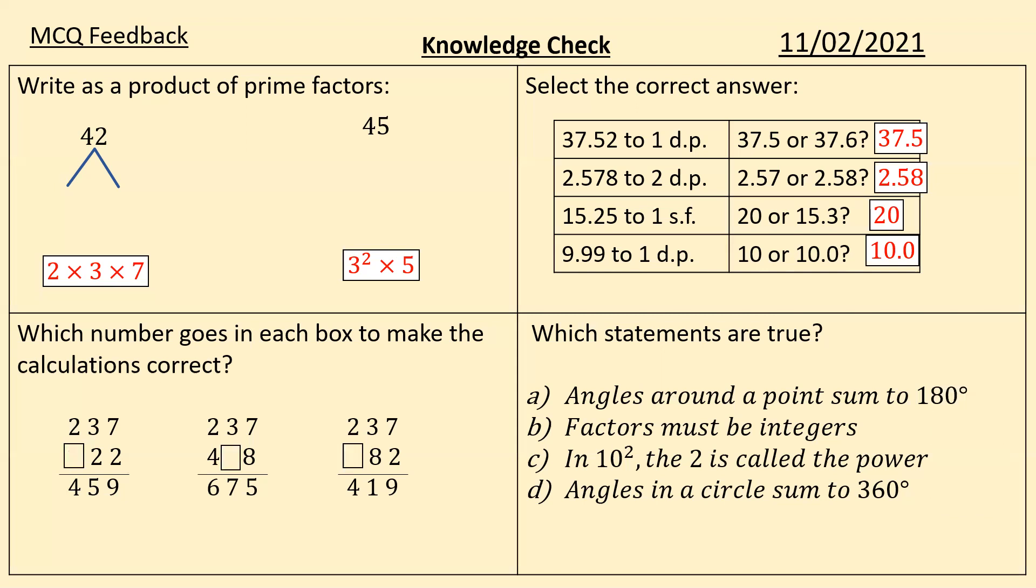Very similar with the last one. Three and eight, we can see in the tens column, which means 10 of those tens would have become 100. So we actually already have three hundreds. We only need to add the extra one. The statements over here: angles around a point do not sum to 180 degrees. They sum to 360 degrees. And the little two is what we call the index that's written in superscript, meaning it's in small, but above the number at the top there. That is the index, not the power. So you may also want to write those A and C out correctly. Angles around a point sum to 360 degrees. And in 10 to the two, the two is called the index.